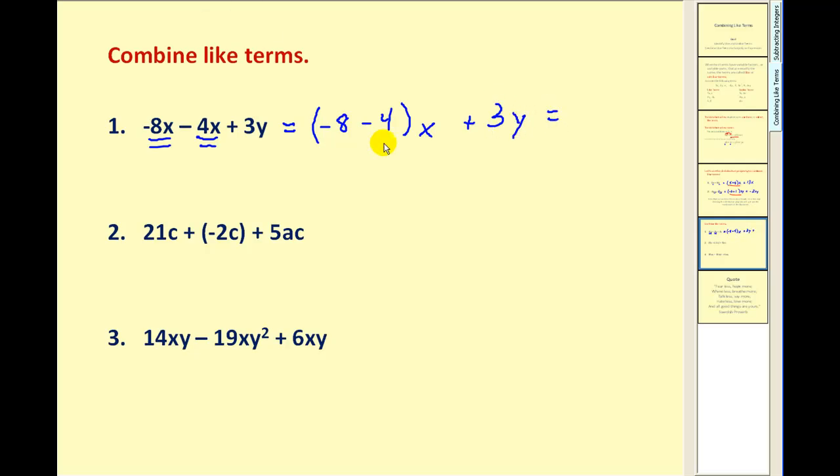Now there's a couple of ways to address this subtraction problem. We covered this in previous videos. If we can leave this as subtraction, that's fine. Or if we want to convert it to addition, it would be negative eight plus negative four. Either way we're going to end up with a negative twelve. So negative twelve x plus three y.